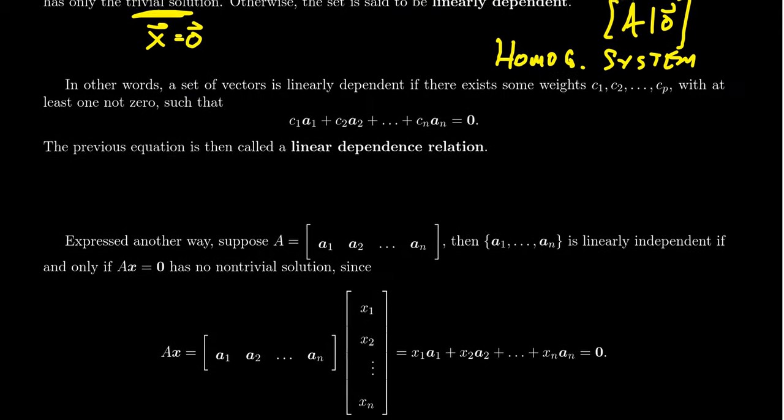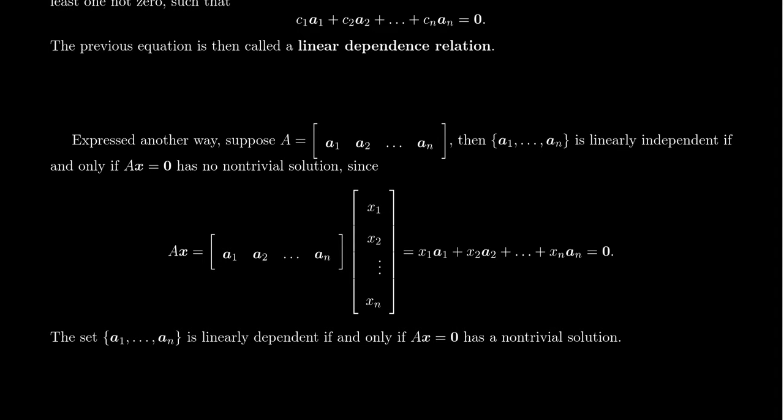As I mentioned earlier, we can visualize this vector equation as a matrix equation. If A is the matrix whose column vectors are a₁, a₂, up to aₙ, then the column vectors are linearly independent if and only if Ax = 0 has only trivial solutions. If you take a matrix whose column vectors are given and a vector x₁, x₂, up to xₙ, the matrix product gives you this linear combination. So a set of vectors is linearly dependent if and only if the equation Ax = 0 has a non-trivial solution.